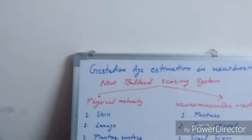Hello everyone. To assess the gestational age in newborns, there are various methods like the Dubowitz scoring system and Ballard scoring system. In this video, I will describe the Ballard scoring system.